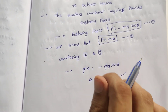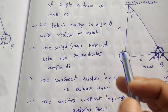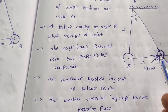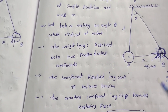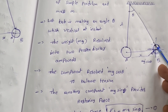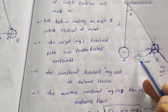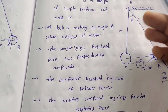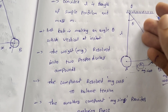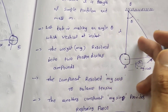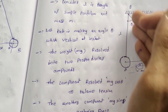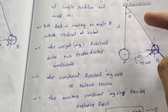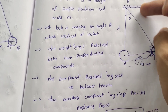Now sin theta. From triangle OAB, sin θ = AB by OB. AB is equal to x, and OB is equal to L, the length of the pendulum. So sin θ = x/L.